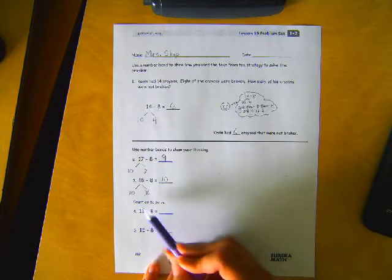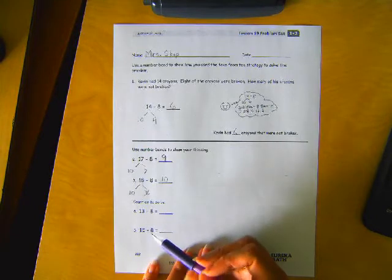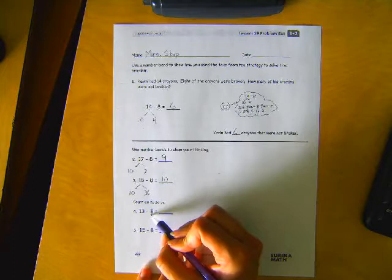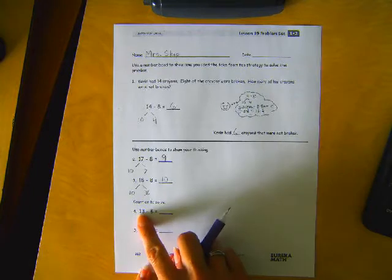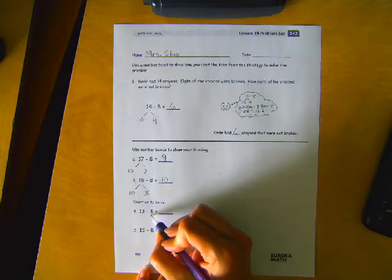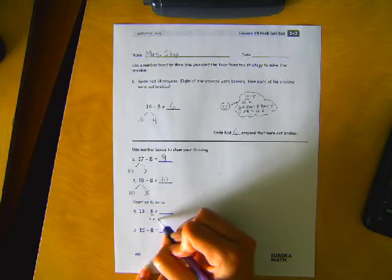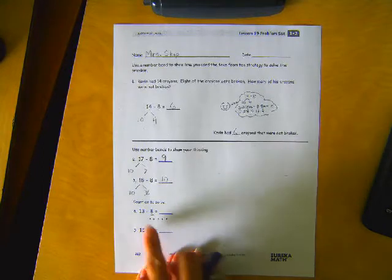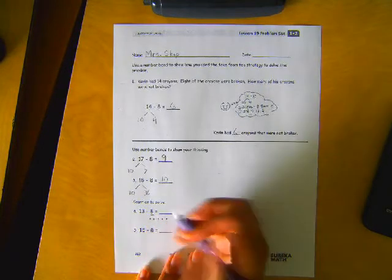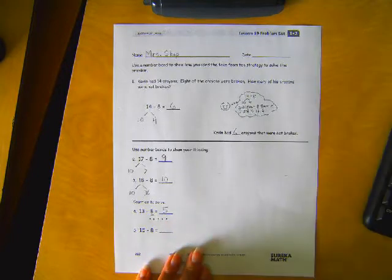Now, this one says count on to solve. Okay, so we're going to start at the smaller number and count up to the 13. So we're going to say 8, 9, 10, 11, 12, 13. That took 5 dots. So 13 minus 8 equals 5.